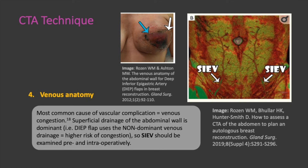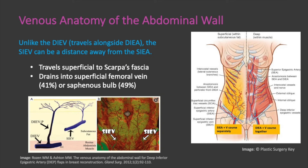One of the more important components of the CTA interpretation is the venous anatomy. The most common cause of vascular complication in deep flap breast reconstruction is venous congestion. In contrast to the arterial supply, superficial venous drainage is dominant. This has significant influence on the fate of abdominal wall flaps. When the deep inferior epigastric vein is used to drain a deep flap, the non-dominant drainage system is being used, which predisposes the flap to congestion. In all cases, the SIEV should be examined on CTA and intraoperatively, as this can be used to augment venous drainage of a flap that is prone to or demonstrating signs of congestion.